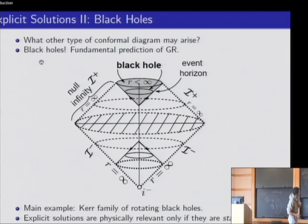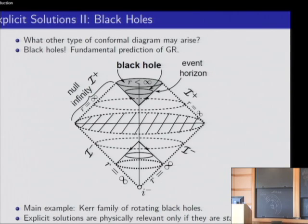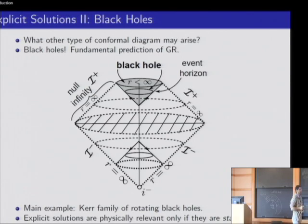Let's see an example where this is not true. Here I have a spacetime where null geodesics in this null cone do not go to infinity — in this region, r, the distance from an isolated system, is always bounded. So if I have an event here, this event can only propagate signals within this region and can never reach infinity. This is precisely the definition of a black hole: a region in spacetime from which signals can never escape to arbitrarily large distances.